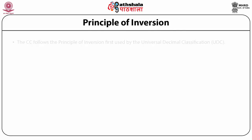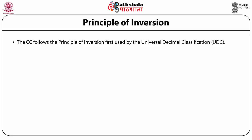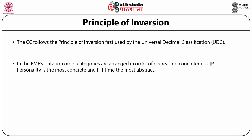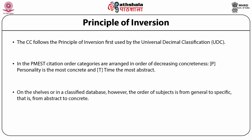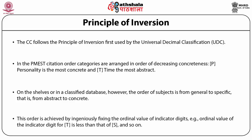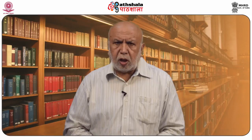The Colon Classification follows the principle of inversion, first used by the UDC. In the PMEST citation order, categories are arranged in order of decreasing concreteness — personality is the most concrete and time the most abstract. On the shelves or in a classified database, however, the order of subjects is from general to specific (abstract to concrete). This order is achieved by ingeniously fixing the order value of indicator digits — for example, the order value of indicator digit T is less than that of space.